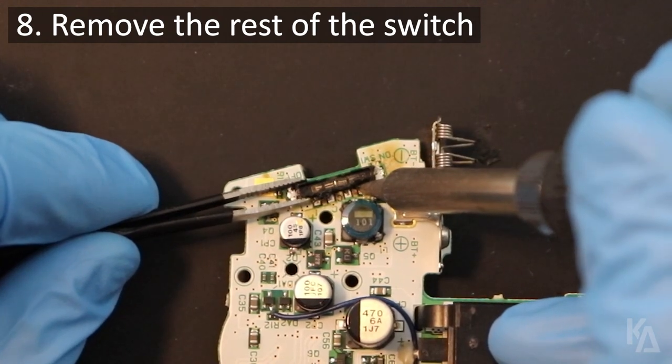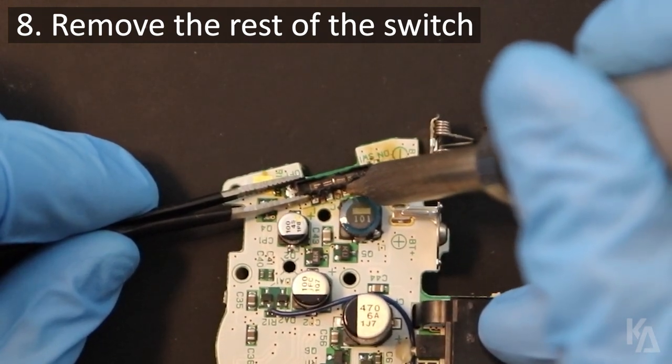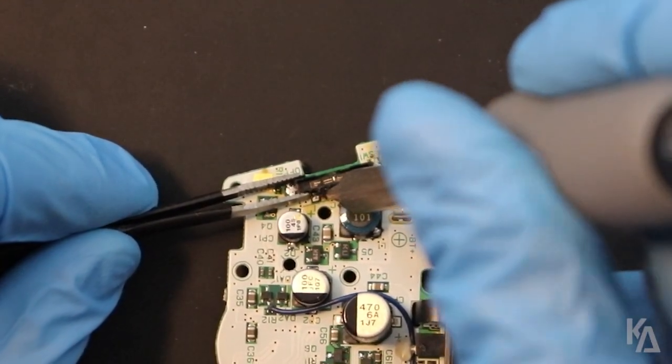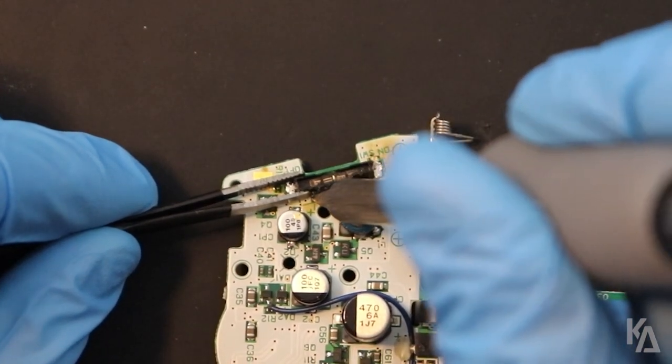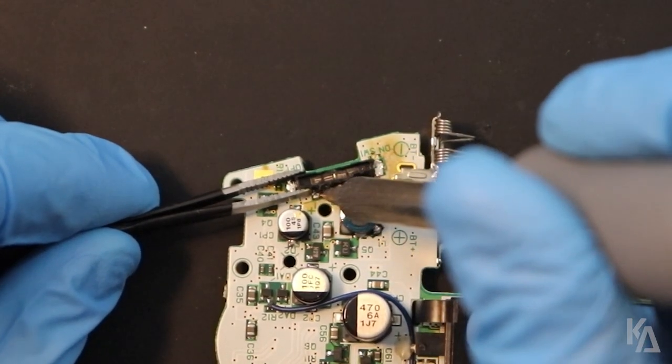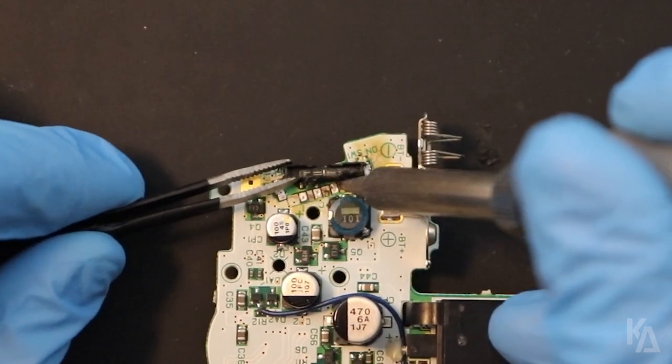Now grab the body of the remaining base of the switch and alternate melting the remaining solder on the four joints on the back of it. As you're doing this, gently pull the piece away from the board and it should finally come away without too much effort.